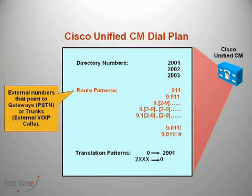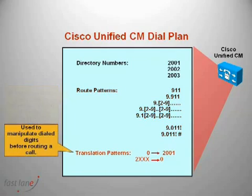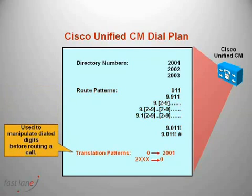Secondly, we have route patterns. Route patterns are used to make external calls. These can be assigned to gateways to allow us to make calls out to the PSTN or trunks for external Voice over IP calls. Lastly, we have translation patterns. Translation patterns are used to manipulate dial digits before a call is routed.